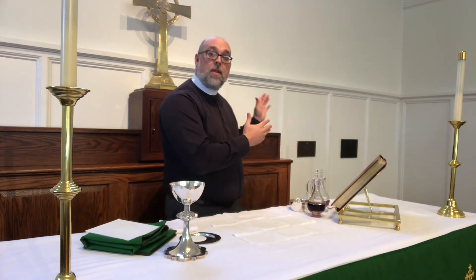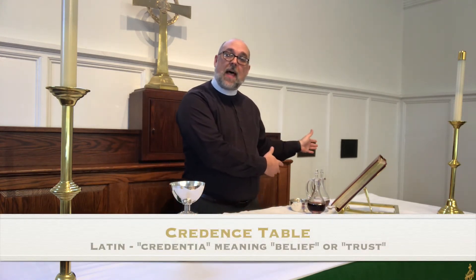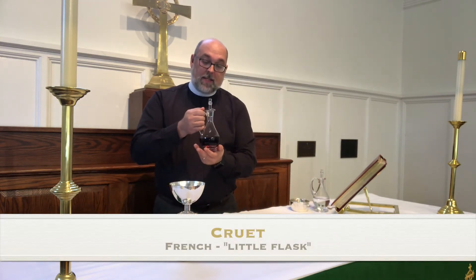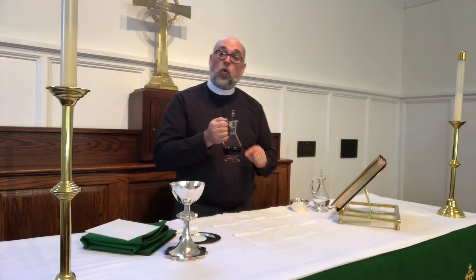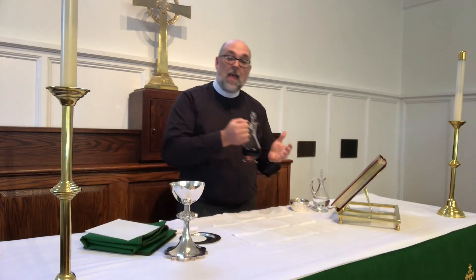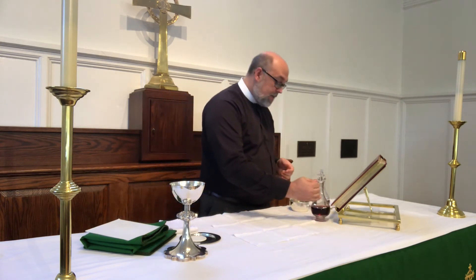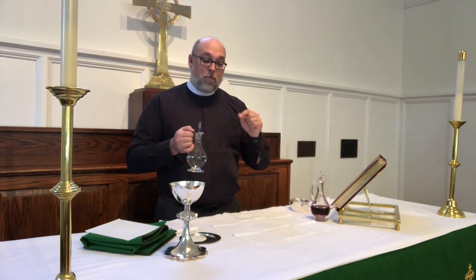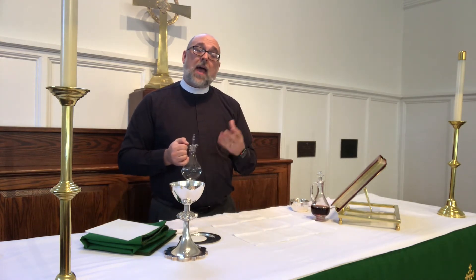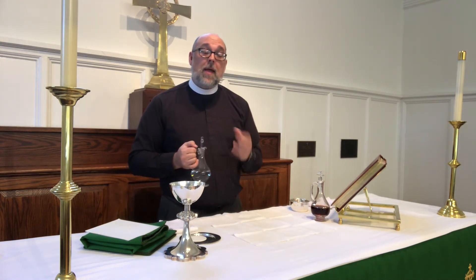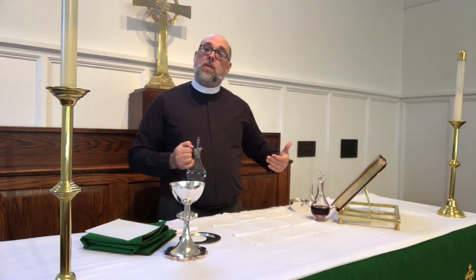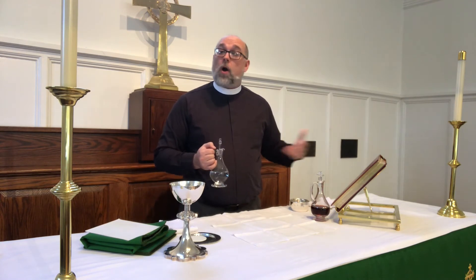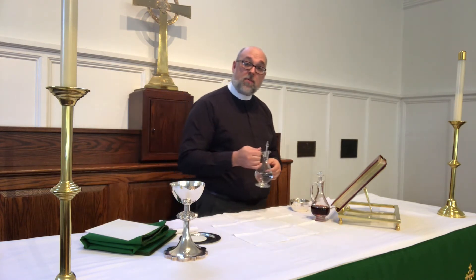Also, on the credence table — the table to the side of the altar — we have a cruet of wine. This wine has not yet been blessed, but the cruet is the vessel from which you take and pour into the chalice to be consecrated. We also have a cruet of water that is used to cut the wine just a little bit, but also theologically because when Jesus was stabbed in his side, blood and water poured out — and so that's the theological reason for the water.